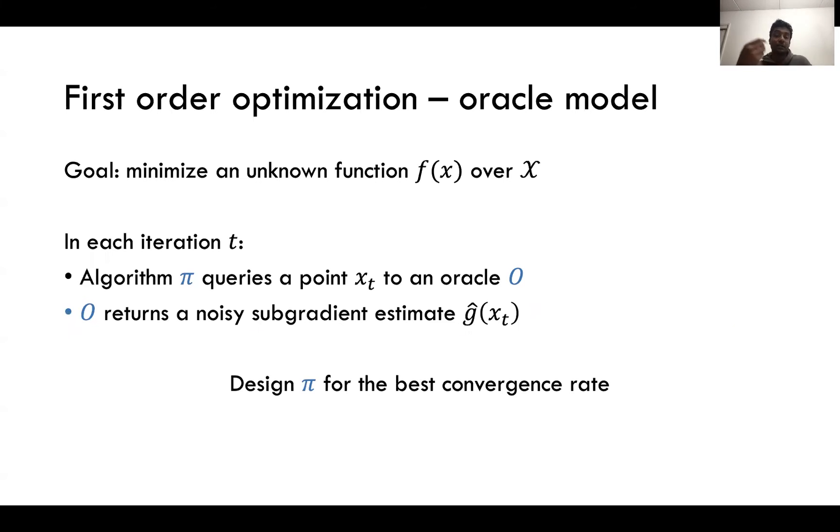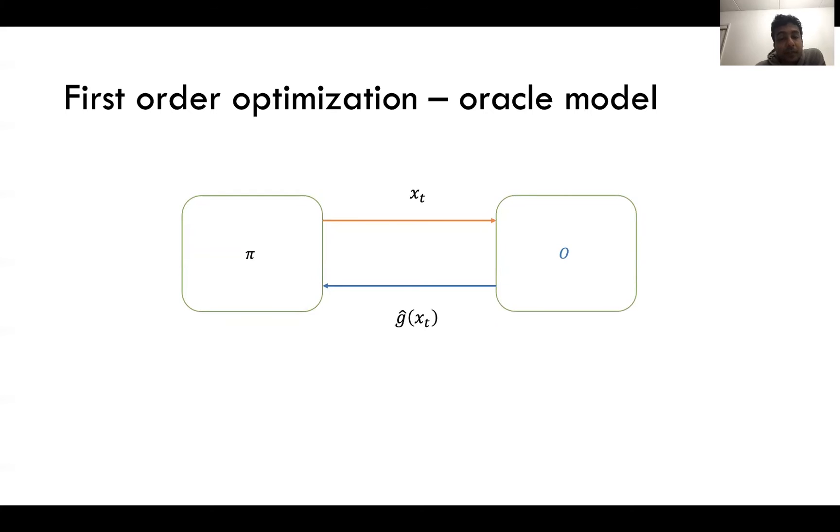So we are to design the algorithms that's going to choose these query points in order to come up with the fastest possible convergence. Pictorially this is how it looks like: you have the algorithm π that's going to query x_t at each time to an oracle O that's going to return ĝ of x_t.